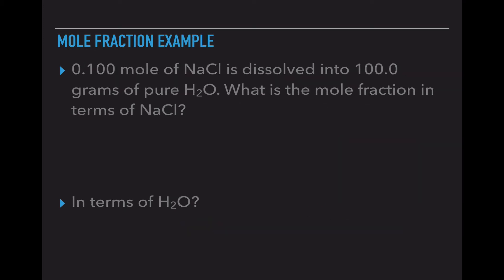If you have 0.1 moles of NaCl dissolved into 100 grams of pure water, what is the mole fraction in terms of NaCl? First thing we have to do is write down the number of moles. So I have moles of NaCl is 0.1. They gave me grams of water. What I am going to have to do is that sample mass over molar mass equation equals number of moles. My sample mass is 100 and my molar mass of water is 18, and that gives me 5.56 as my number of moles of water.